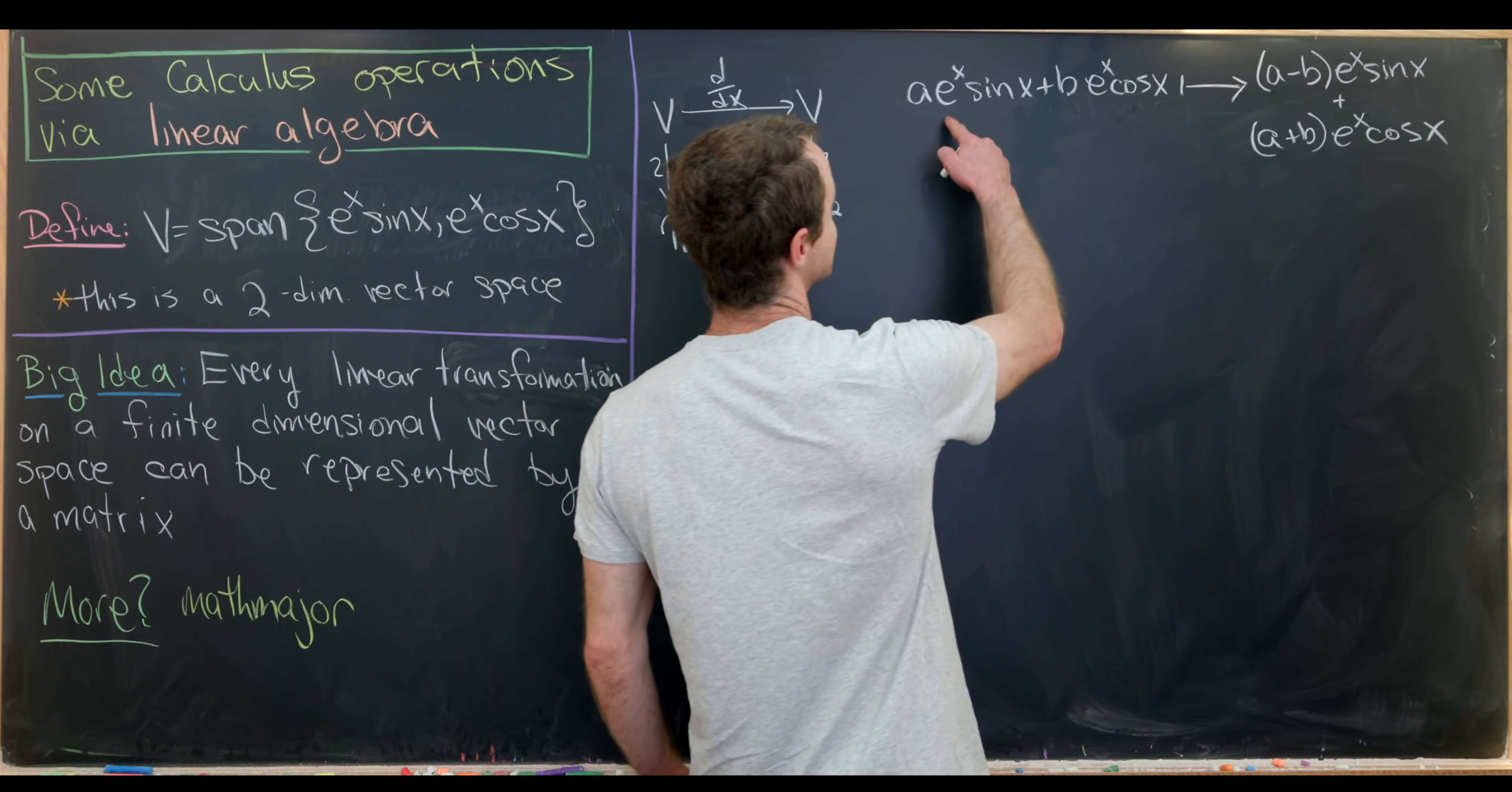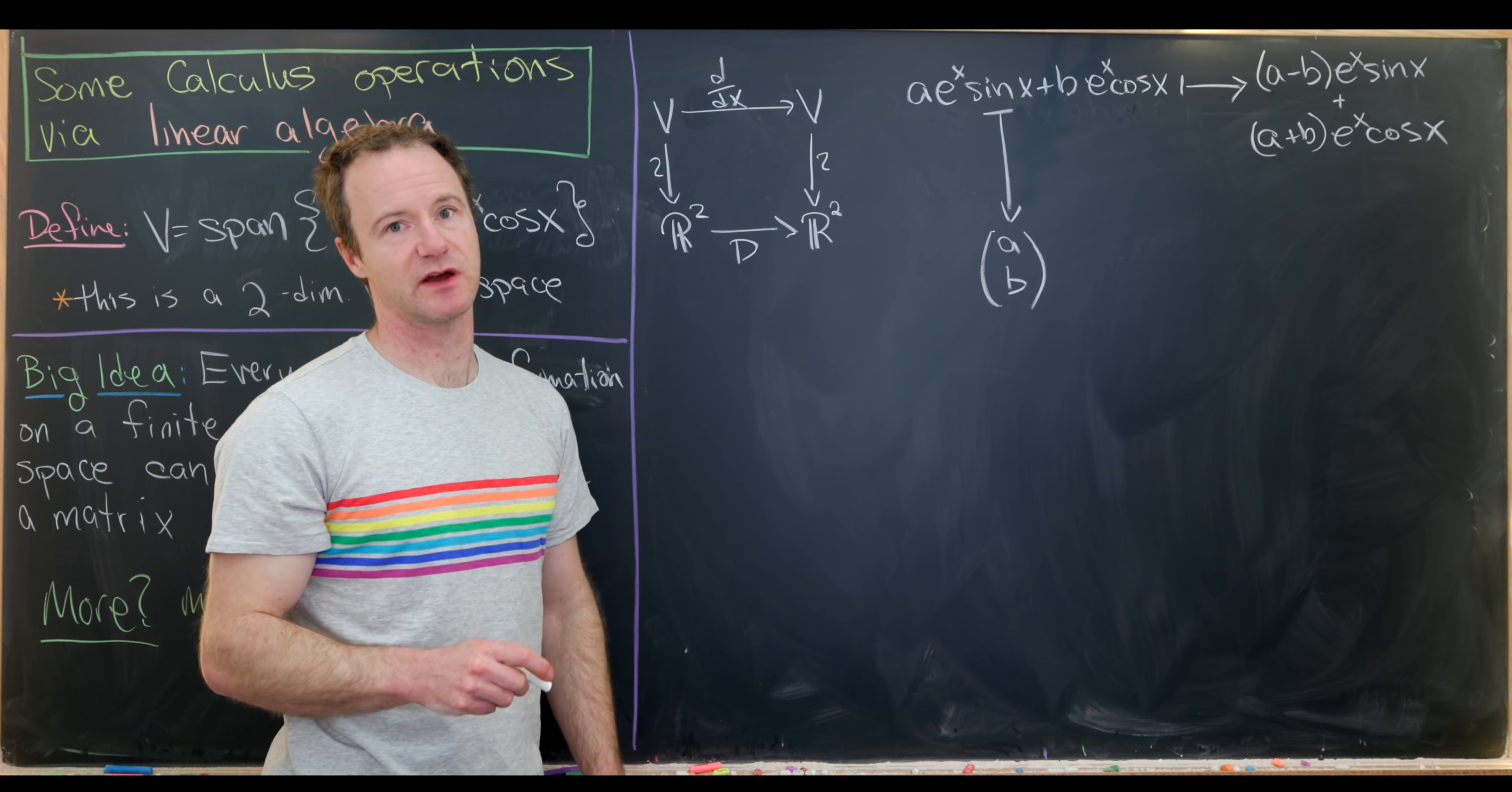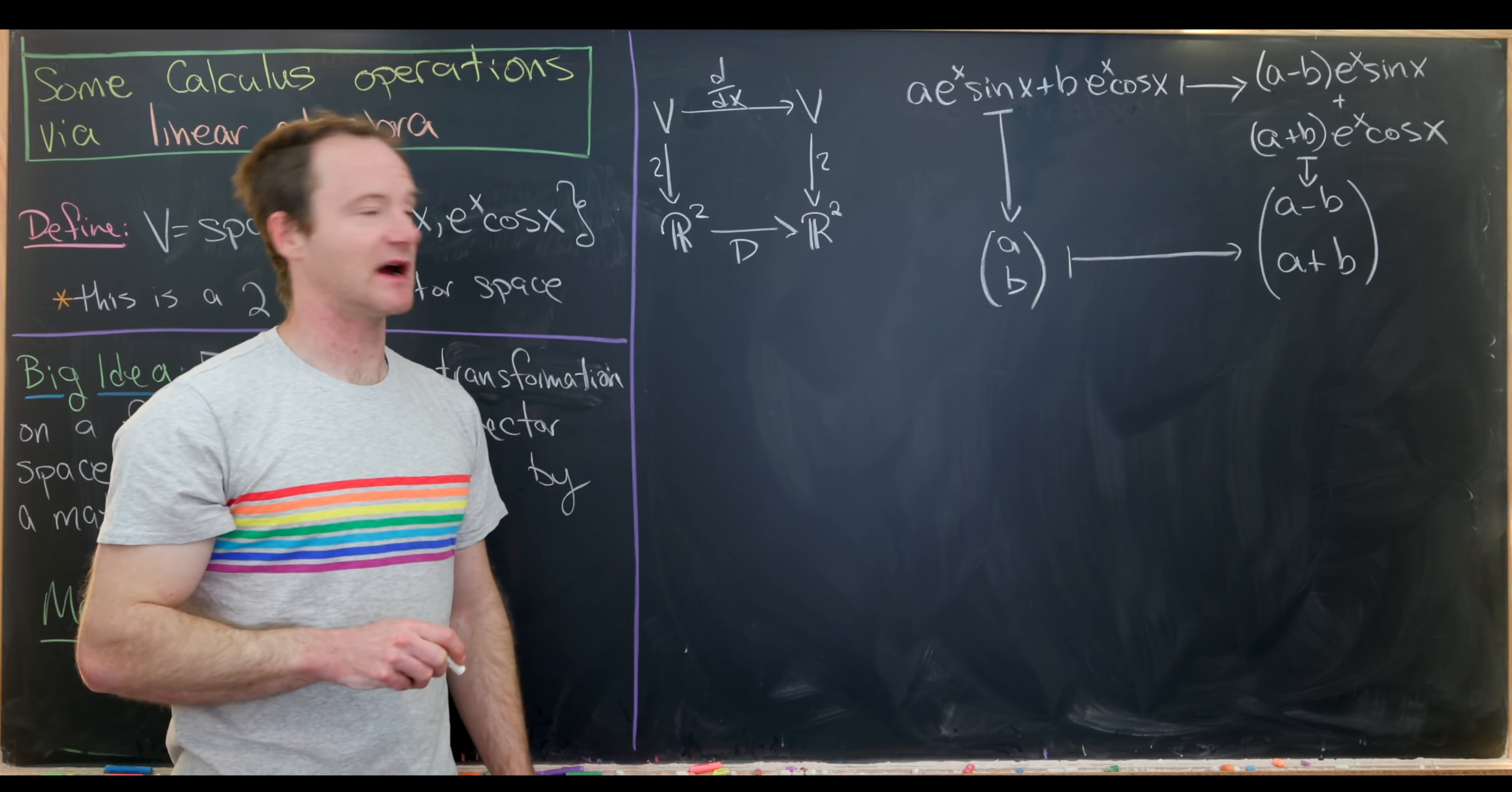Why is that? Well, we get this a times e to the x sine x from taking the derivative of e to the x from this term. We get the negative b from taking the derivative of cosine for this term. And then likewise, the other portions of the derivative give us this over here. Now we'd like to make kind of an obvious matching of this element with something from R2. And we'll take maybe the simplest matching, which is just a, b. So that means e to the x sine x is playing the role of 1, 0, and e to the x cosine x is playing the role of 0, 1. Okay, so that means over here we have a minus b, a plus b. So let's see, that's the matching here.